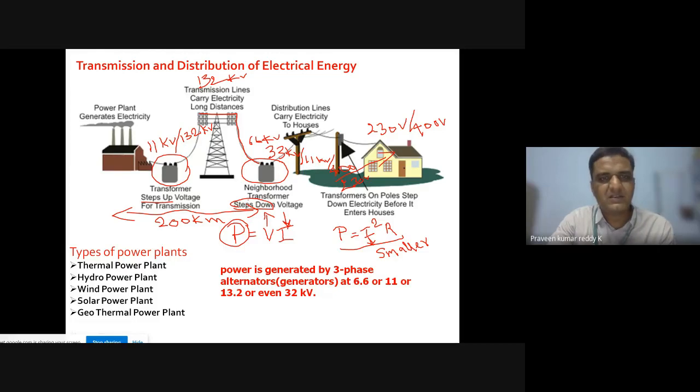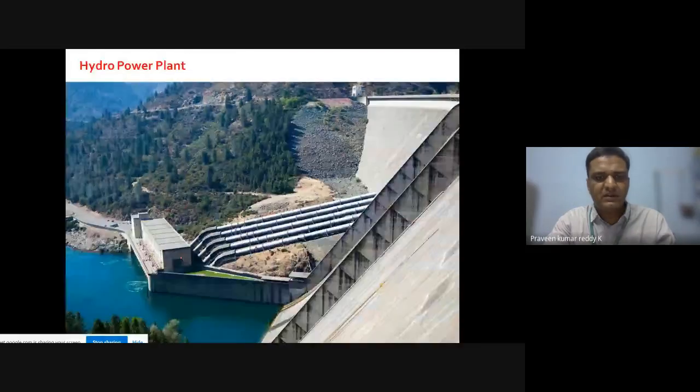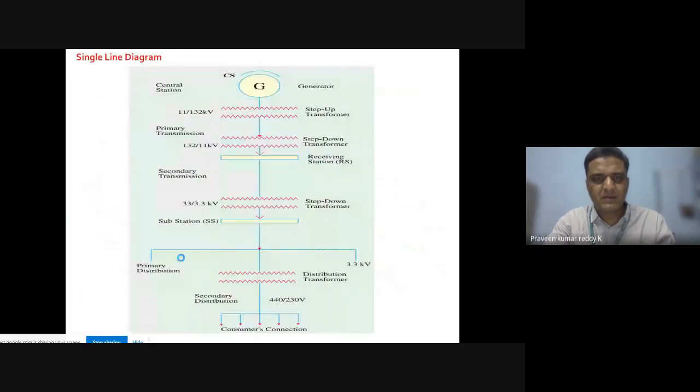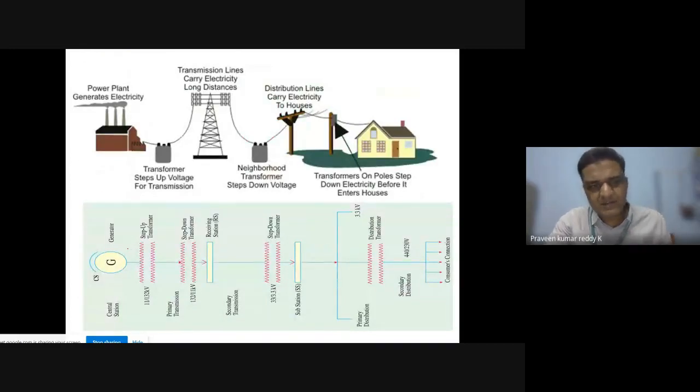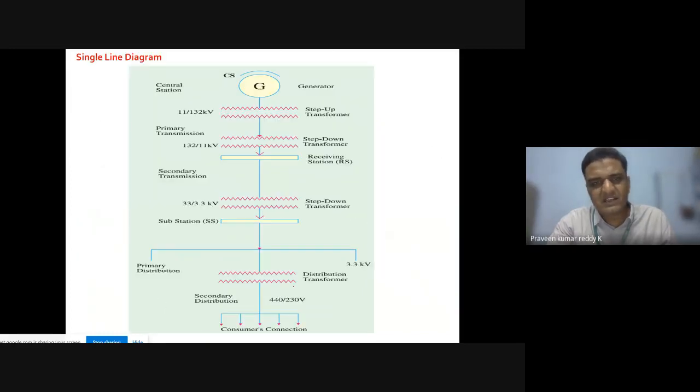I will step it down step by step by using different range of transformers and from that 400 volts I will give to the customer house or I can give 230 volts. That is what the process happens. The point we have to understand here is why should we step up and why should we step down. The reason behind is the basic formula P is equal to VI. If I increase the voltage, current value can be minimized. If I minimize the current value, smaller conductors can be used because heat can be minimized. Now, the same picture is shown as a single line diagram in the textbooks.